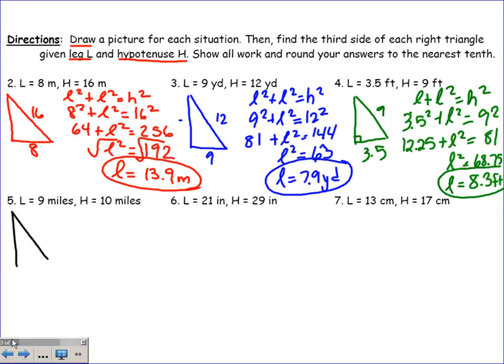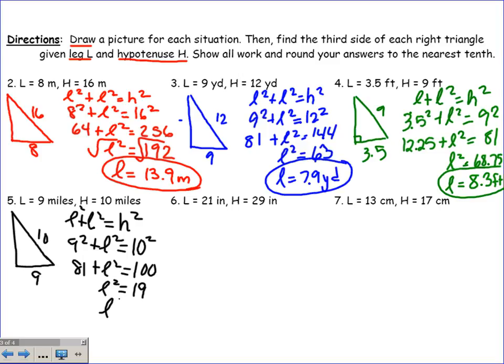Next, this is a 9, this is a 10. 9 squared plus L squared equals 10 squared. 81 plus L squared equals 100. If I subtract 81 from 100, I have 19. So that's probably a little bit more than 4 but less than 5, like 4.4 miles.